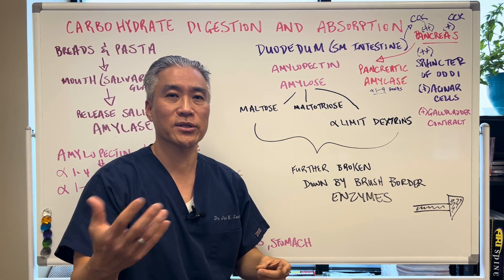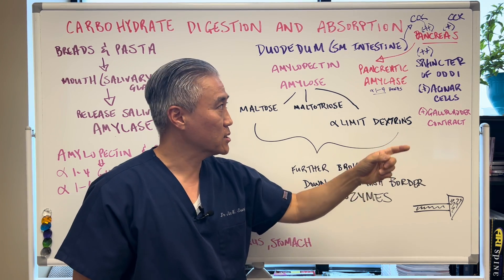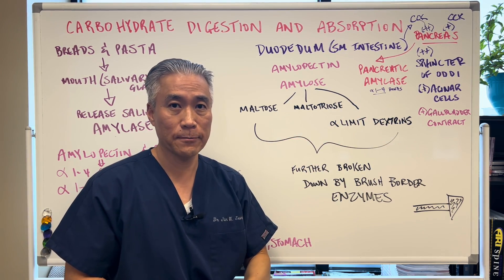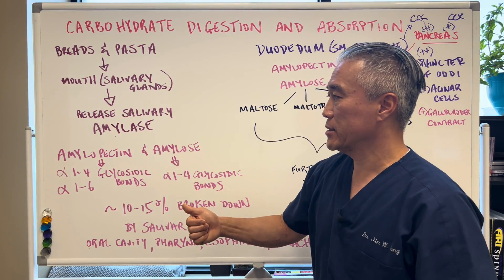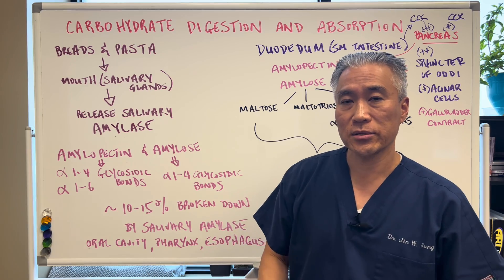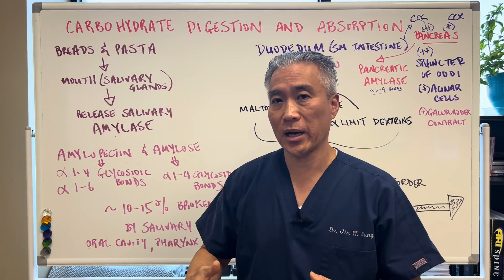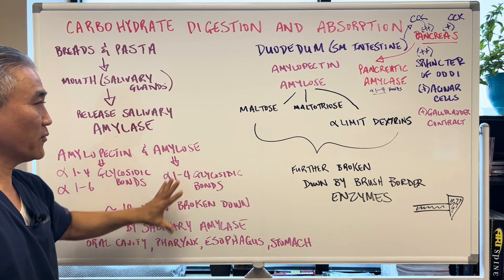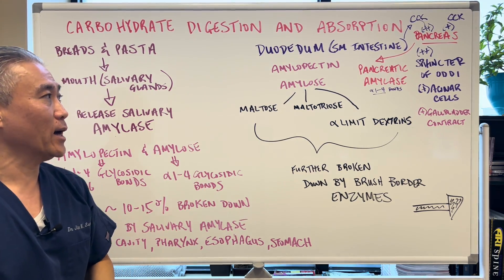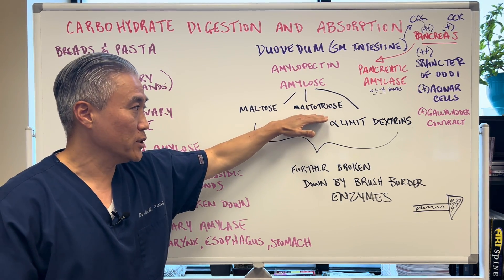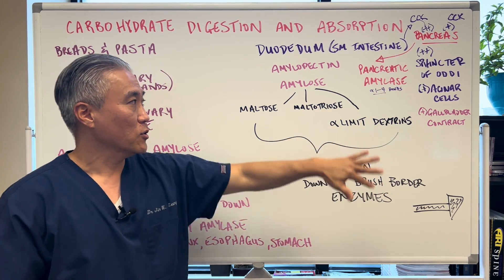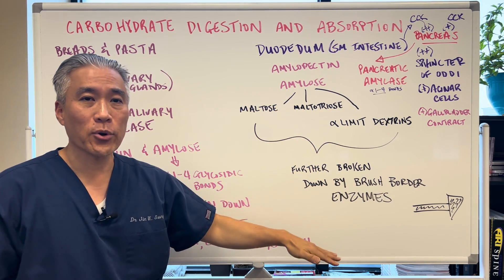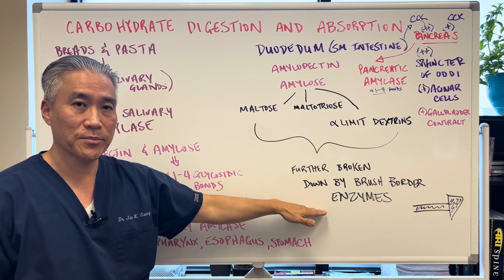The pancreas produces pancreatic amylase, which can break the alpha-1,4 bonds. Both pancreatic amylase and salivary amylase are able to break down these 1,4 glycolytic bonds. We'll talk about how the body breaks down the 1,6 bonds later. So amylopectin and amylose, from the breakdown of carbohydrates, hit the duodenum and are broken down into maltose, maltotriose, and alpha-limit dextrins — three different components. These are what we call disaccharides or polysaccharides, and they'll be further broken down by brush border enzymes.